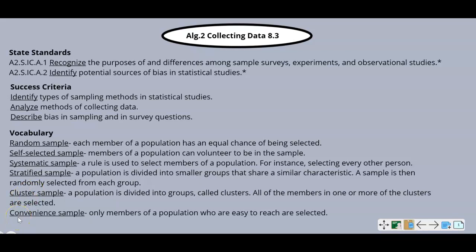A stratified sample: a population is divided into smaller groups that share a similar characteristic, and a sample is then randomly selected from each group. A cluster sample: a population is divided into groups called clusters, and then all of the members in one or more of the clusters are selected.